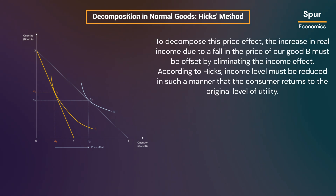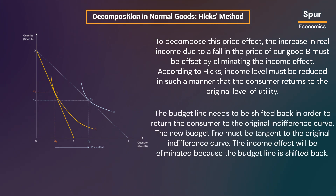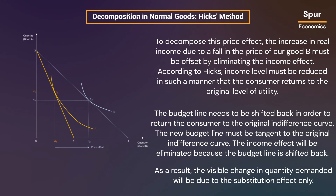To decompose this price effect, the increase in real income due to a fall in the price of good B must be offset by eliminating the income effect. According to Hicks, income level must be reduced in such a manner that the consumer returns to the original level of utility. The budget line needs to be shifted back in order to return the consumer to the original indifference curve, and the new budget line must be tangent to the original indifference curve. The income effect will be eliminated because the budget line is shifted back, and as a result, the visible change in quantity demanded will be due to the substitution effect only.